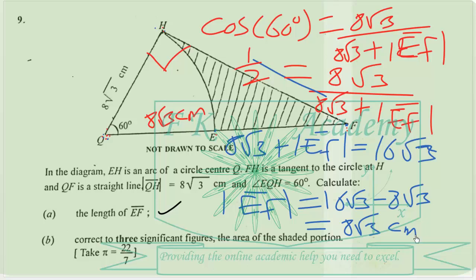We are also asked to find, correct to 3 significant figures, the area of the shaded portion. To do that, let us first find the length of FH. We know HQ and we know QF, so let's find FH using Pythagoras' theorem.